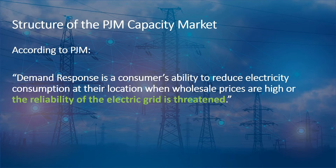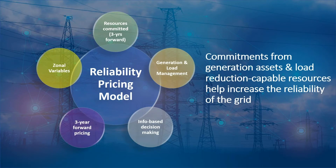It's really this reliability aspect that we're going to talk about today. The basic concept of the capacity market is to provide PJM with various assets — we'll talk about those in a few minutes — many different forms of which can be called to mitigate load constraints and interruptions, thereby ensuring reliability. As you can see in this graphic, what we're trying to do is gather commitments from generation assets or any type of load interruption capable resource, so that the market can rely on those commitments and ensure reliability of the grid.